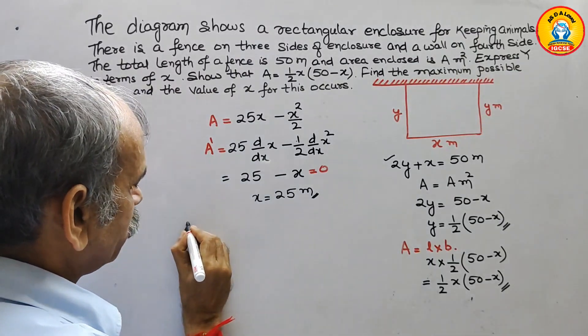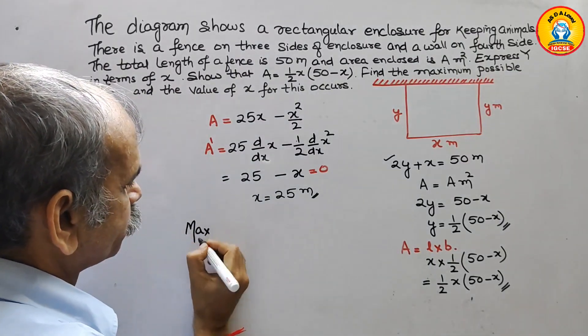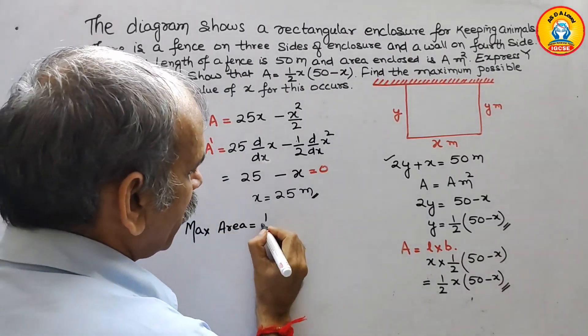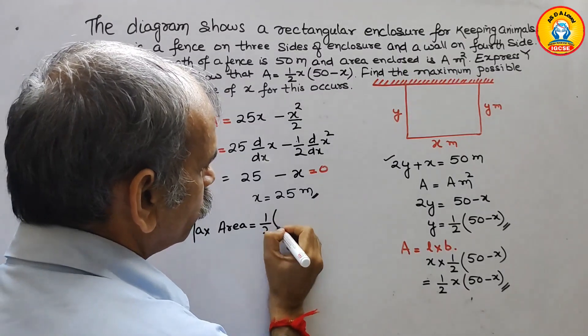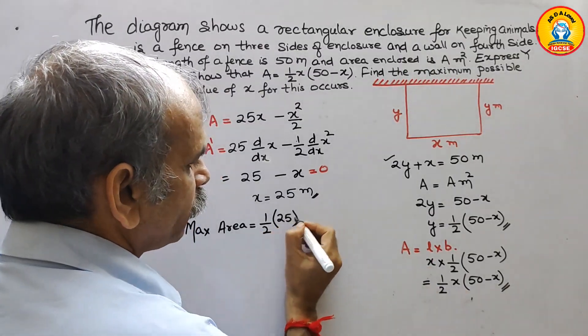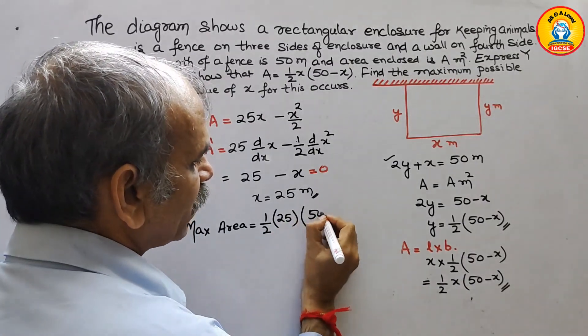So now we can say maximum area, 1 by 2, x is 25, and next is 50 minus 25.